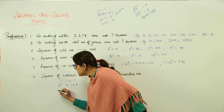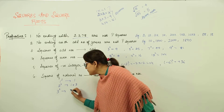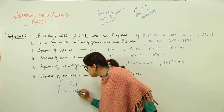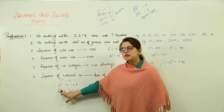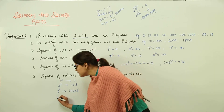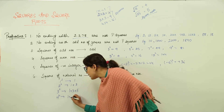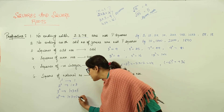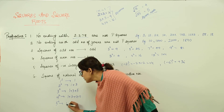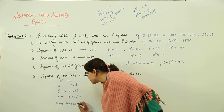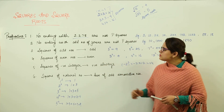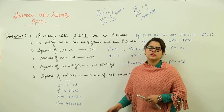Similarly, 3 squared equals the sum of the first 3 odd consecutive numbers: 1 plus 3 plus 5 equals 9. For 4 squared, we get 1 plus 3 plus 5 plus 7 equals 16. And 5 squared equals 1 plus 3 plus 5 plus 7 plus 9 equals 25. This property holds true for all natural numbers.